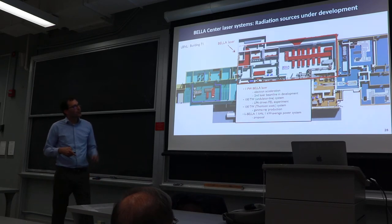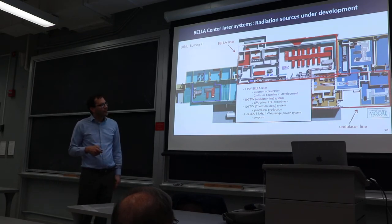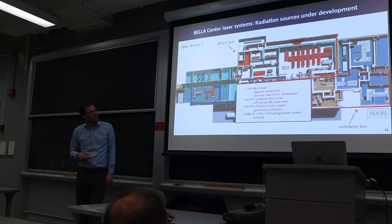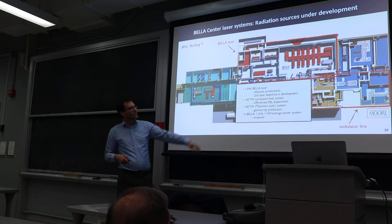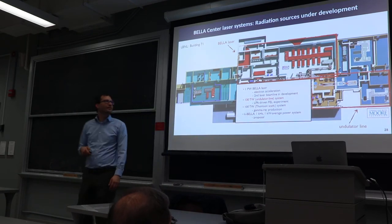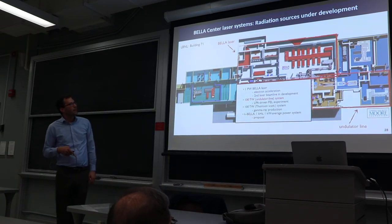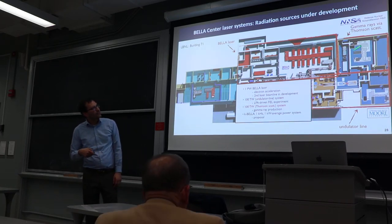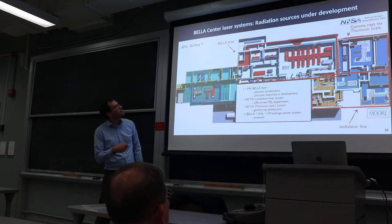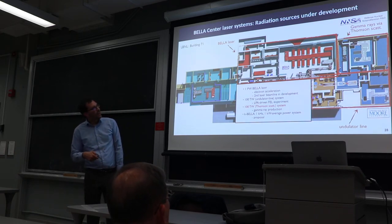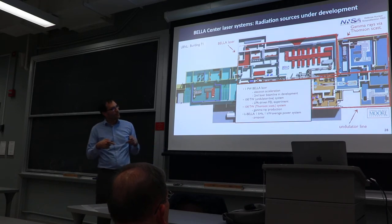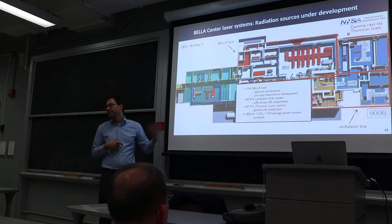This is our main laser facility for electron acceleration. We have the second beam line in development. We also have two smaller laser systems: an undulator line with a 100 terawatt system being used to develop a free electron laser based on this laser plasma accelerator, and another almost identical 100 terawatt laser system in Building 71 used for Thompson scattering production of MeV photons. This is funded by DNA.